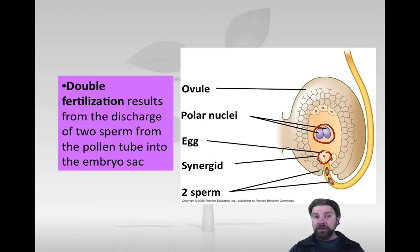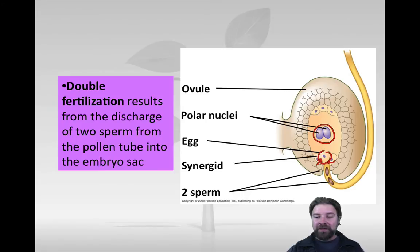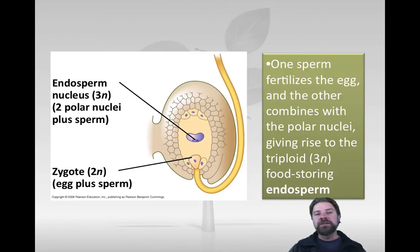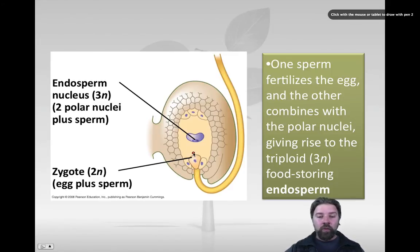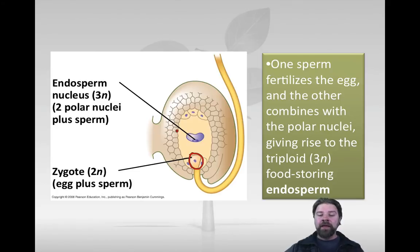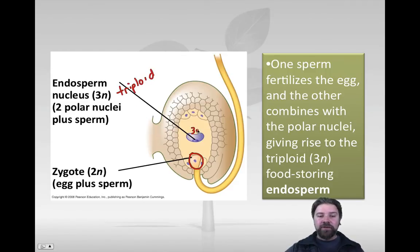The egg and the polar nuclei get fertilized - that's why we call it double fertilization. The synergid cells help usher the sperm from the pollen grain towards the egg and the polar nuclei. Once the sperm have found their locations and fertilize those cells, we get two things: one is a diploid zygote - both sperm and egg were haploid before fertilization - and the other is a triploid 3n endosperm, produced from the fertilization of the two polar nuclei. Those are the two parts of a double fertilization event.